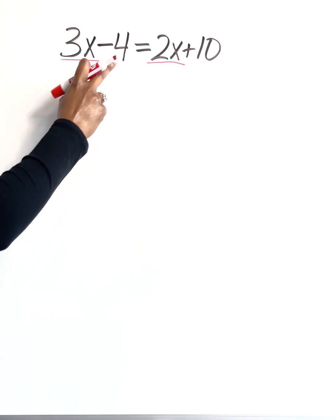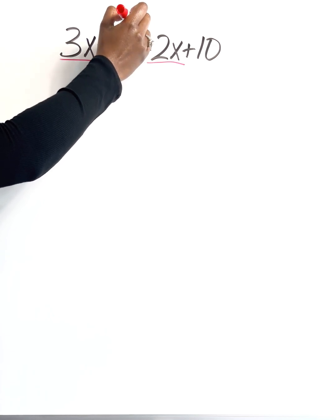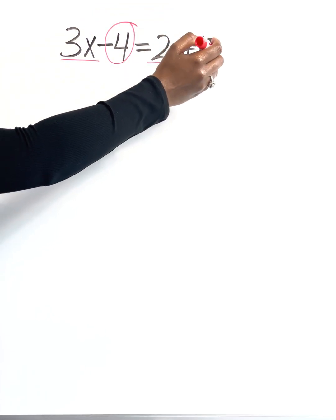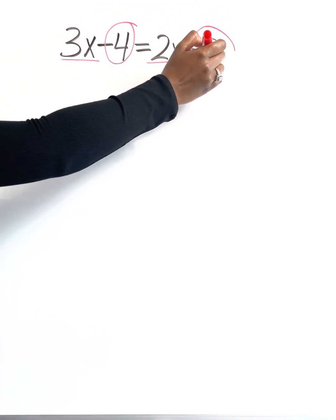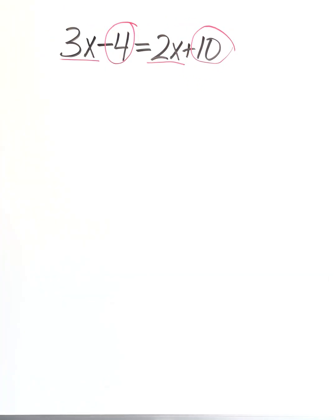Now, when I have values like 4 and 10 that aren't attached to anything, these are considered constants. And constants can be combined because these are values that don't change. 4 is always going to be 4 and 10 is always going to be 10. So once you visually understand what can be combined, then you can decide which values you want to move.